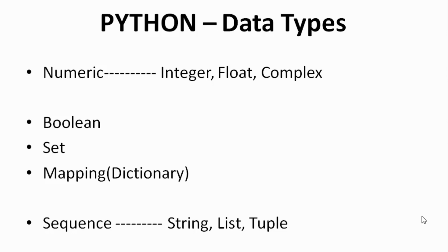Hey guys, welcome back to the Python series. We already talked about the basic concepts behind Python data types — what they are and how they work. There are five different data types in Python: numeric, boolean, set, mapping, and sequence. In numeric we have integer, float, and complex. In sequence we have string, list, and tuple. Today we are going to cover the sequence data type, which is list.